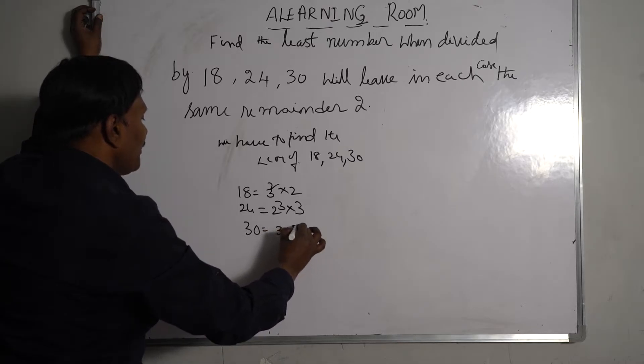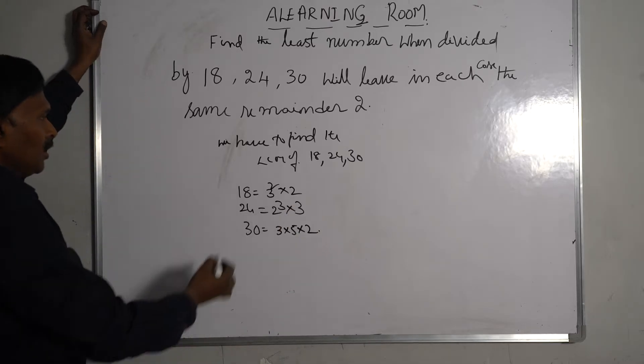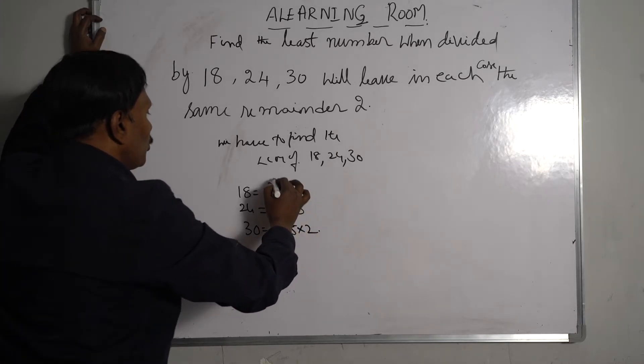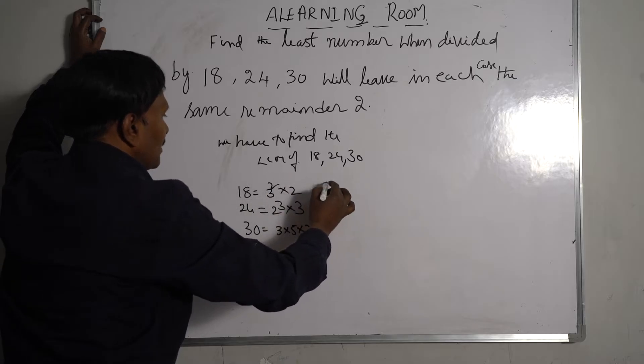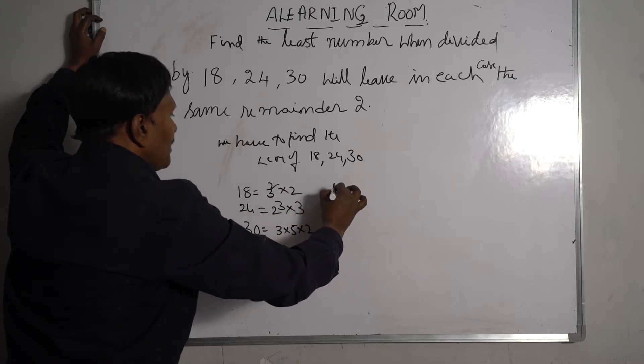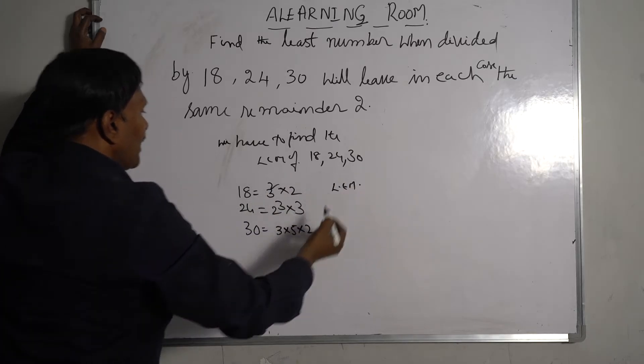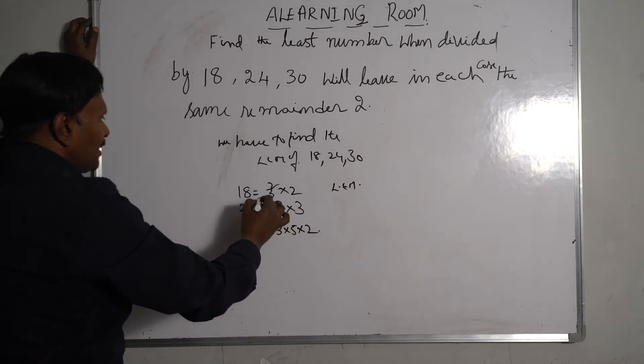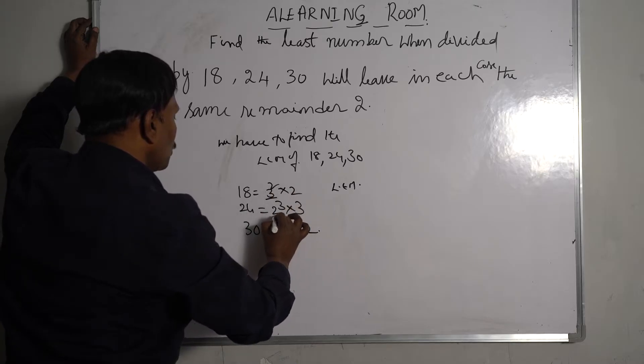By the definition of LCM, we have to take the highest powers of prime factors. LCM is the highest powers of the prime numbers products. So LCM is equal to 3 squared, 2 cubed, 5 to the power of 1.